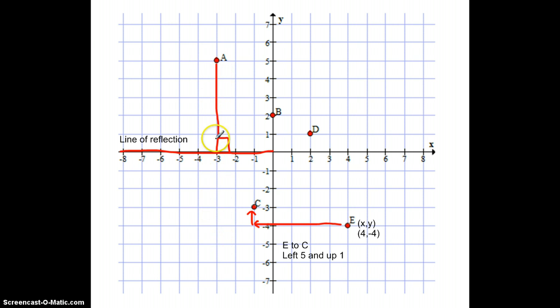...an equal distance. So we want this line here to be an equal distance with a point out here. The easiest way to do that is to count the number of spaces: 1, 2, 3, 4, 5. So if we go out 5 spaces, 1, 2, 3, 4, 5.